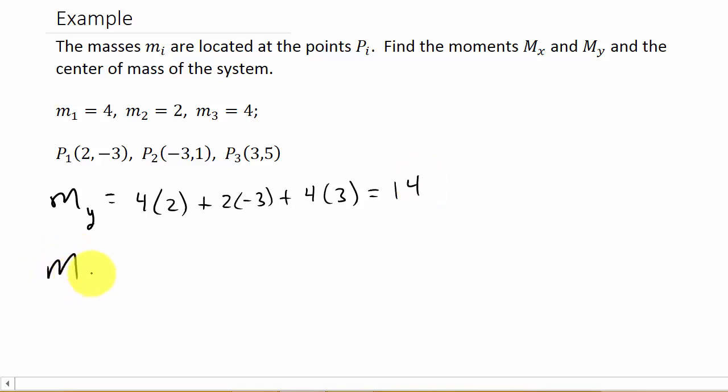Now let's find Mₓ, the moment of the system about the x-axis. That's m₁y₁ + m₂y₂ + m₃y₃, so 4(-3) + 2(1) + 4(5) = -12 + 2 + 20 = 10.